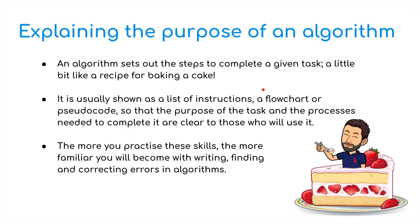As part of the IGCSE we need to be able to explain the purpose of an algorithm so let's break this down. An algorithm sets out the steps to complete a given task. That's basically what an algorithm is, what a computer program is. A little bit like a recipe for baking a cake. It is usually shown as a list of instructions as you've just seen, a flowchart or pseudocode so the purpose of the task and the processes needed to complete it are clear to those who will use it. The more you practice these skills the more familiar you will become with writing, finding and correcting errors in algorithms.